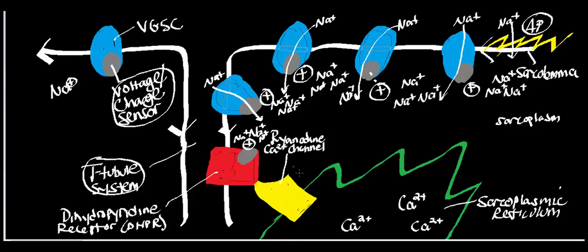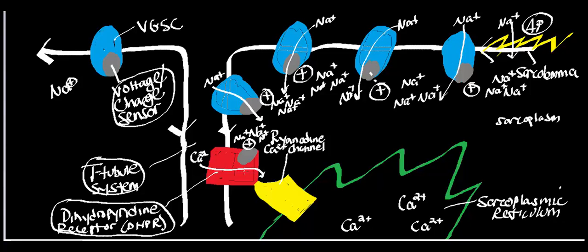The specific one I'm going to talk about is called the DHP receptor, which stands for dihydropyridine receptor. It is an L-type calcium channel. Like the sodium channels, it has a voltage sensor, and when it senses the positive charge that came in from the action potential, it opens. But in this case, it allows calcium through — so calcium moves through into the sarcoplasm.